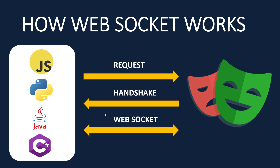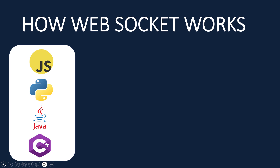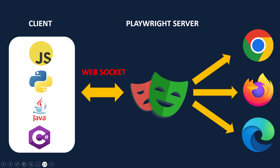To summarize the architecture: we have our clients — JavaScript, TypeScript, Python, Java, C# — using which we write our test scripts. These test scripts send a request to the Playwright server, and all communication is done using the WebSocket. It does a handshake and makes a connection once, so there are no multiple or discontinued connections between the client and the server.